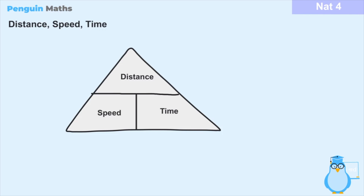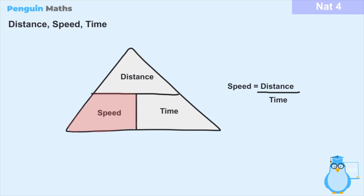What does this mean in terms of the relationship? If we select which variable we want to calculate, the other two are left in a position which looks like the formula to calculate that variable. For distance, since it's on top, speed and time are on the bottom — and because those two are together it's as if they can be multiplied, giving us: distance equals speed multiplied by time. For speed, we have distance on top and time on the bottom, giving us: speed equals distance divided by time.